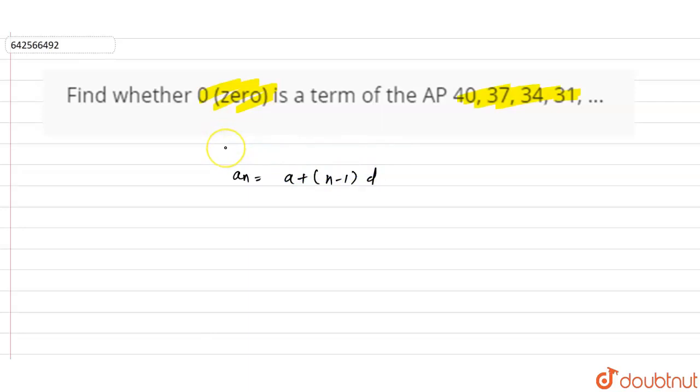So we have to find whether 0 is a term or not. So let the nth term be 0. And a is 40 and d is 37 minus 40, which is minus 3.